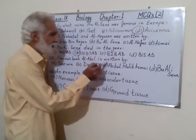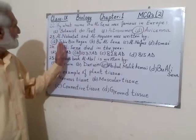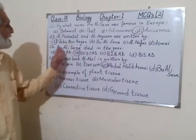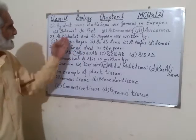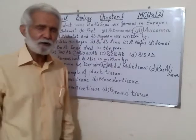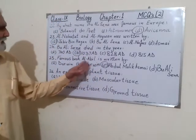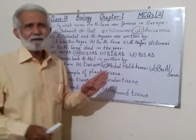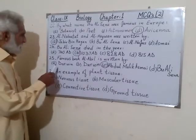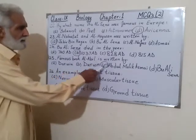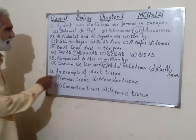Number 25: the famous book Al-Abeel was written by Abdul Malik Asmai. Jabir bin Hayyan has written Al-Abeel and Al-Haywan — sorry, I was mistaken. Al-Abeel was written by Abdul Malik Asmai.